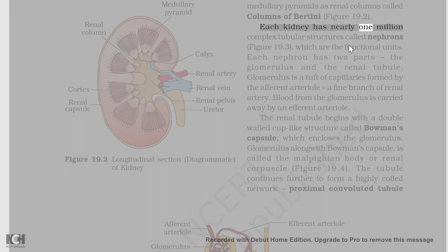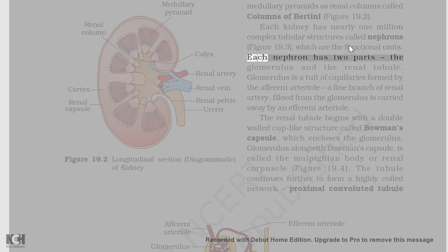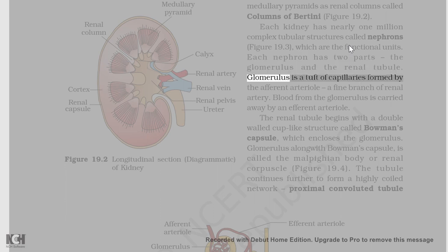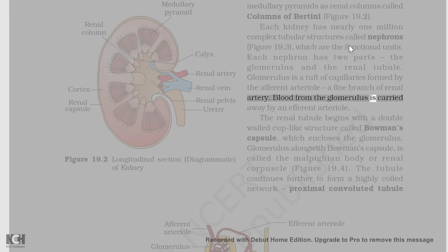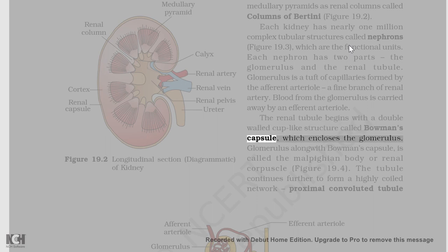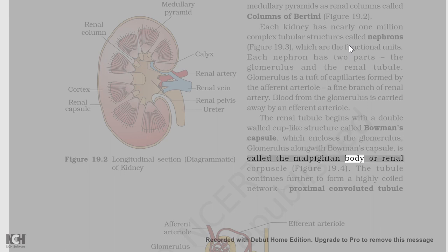Each kidney has nearly 1 million complex tubular structures called nephrons, which are the functional units. Each nephron has two parts: the glomerulus and the renal tubule. Glomerulus is a tuft of capillaries formed by the afferent arteriole, a fine branch of renal artery. Blood from the glomerulus is carried away by an efferent arteriole. The renal tubule begins with a double-walled cup-like structure called Bowman's capsule, which encloses the glomerulus. Glomerulus along with Bowman's capsule is called the malpighian body or renal corpuscle.